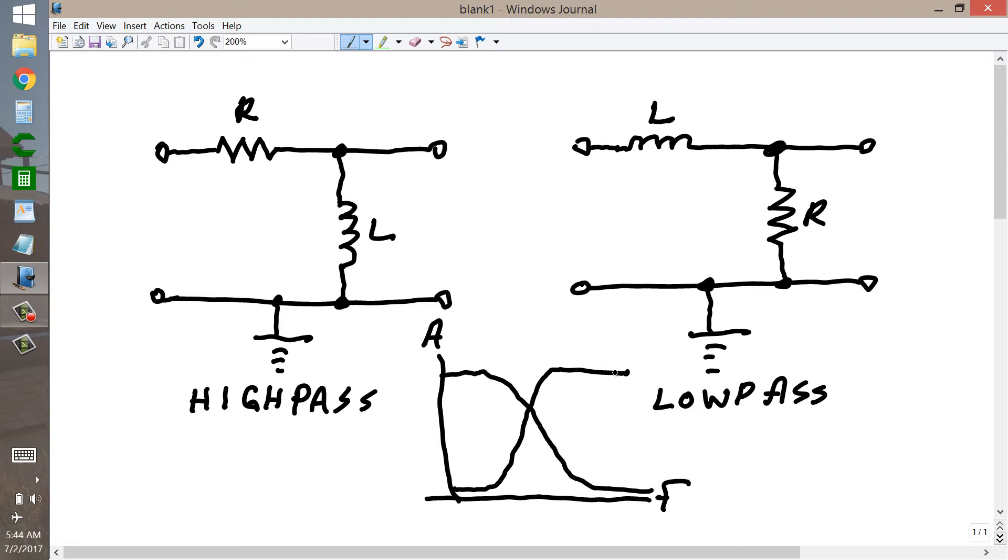In the high-pass response or filter, as you increase the frequency, the amplitude increases and it follows a curve like this. In the low-pass response, as you increase the frequency, the amplitude decreases.